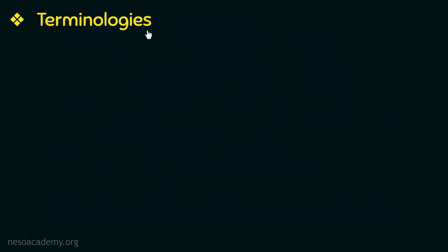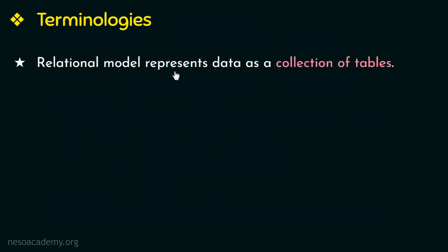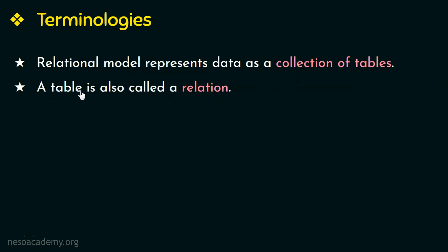Next, let us learn a few terminologies in relation to RDBMS. A relational database model organizes data in the form of tables, or in other words, a relational model represents data as a collection of tables. And here in RDBMS, a table is also called a relation.